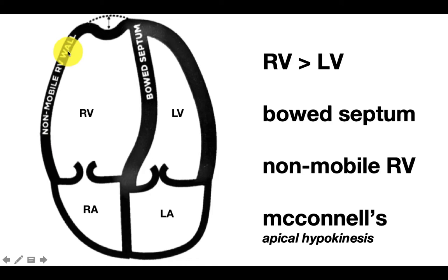And then the last thing is the McConnell sign, which is pretty rare — that's when the actual apex of the RV becomes hypokinetic, giving you an appearance that the RV apex is bouncing up and down in a paradoxical movement. That is not very sensitive for acute PE. You can also see it in cor pulmonale and right heart MI. So just because it's there doesn't necessarily mean it's a PE.